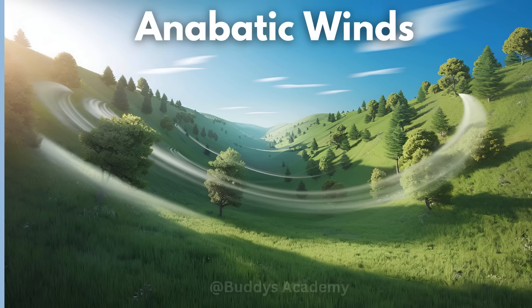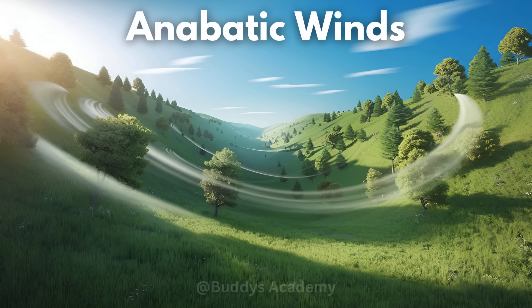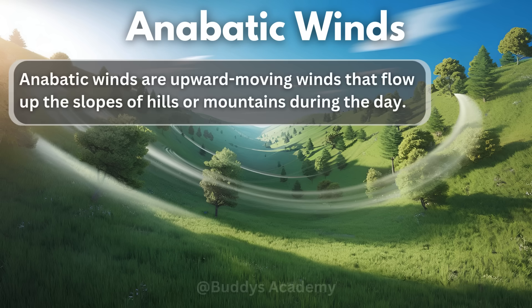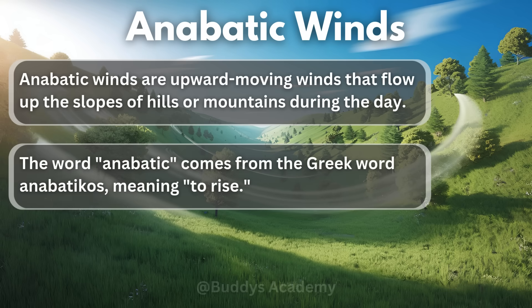We will now look at anabatic winds. Anabatic winds are the exact opposite of katabatic winds. Remember, katabatic winds are cold winds that move downhill at night. Anabatic winds are winds that occur during the day and involve the movement of warm air up a slope. Anabatic winds are upward-moving winds that flow up the slopes of hills or mountains during the day. The word anabatic comes from the Greek word anabatikos meaning to rise. So if you can remember one, just think of the opposite and there you have it.